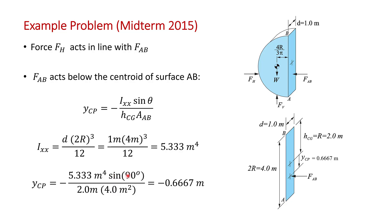Ixx sine of 90 degrees, which is 1. The height of the center of gravity of surface AB is 2 meters. And then the area of the surface is 4 meters squared. And we get the force FAB acts at 0.667 meters below the centroid.